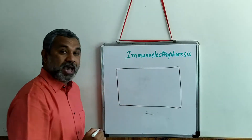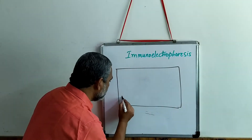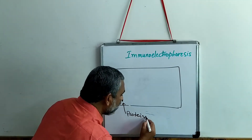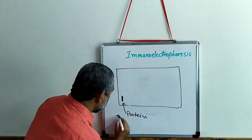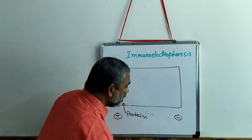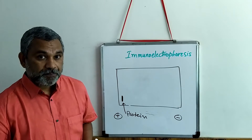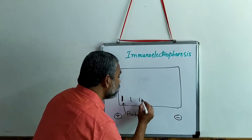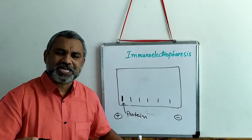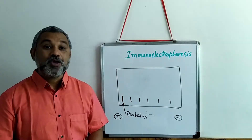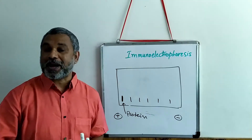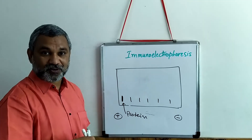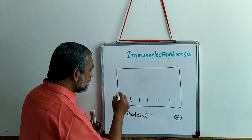We take a glass plate and load the sample — the protein is loaded here. From cathode to anode, we separate the proteins by electrophoresis. Depending on the charge-to-mass ratio, the proteins get separated. Once this separation is complete, the first part is over and we move to the next part: immunoelectrophoresis.